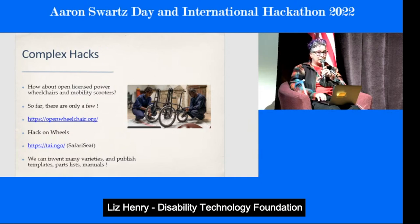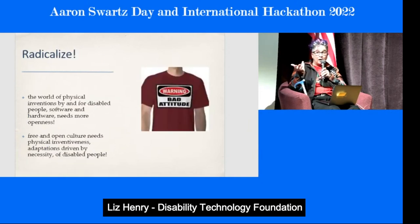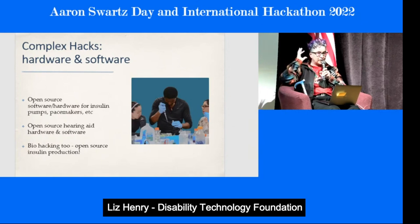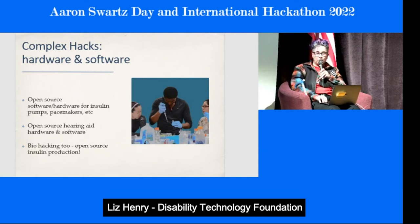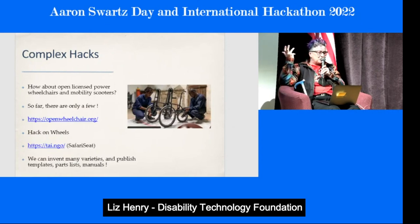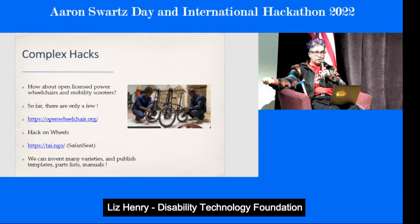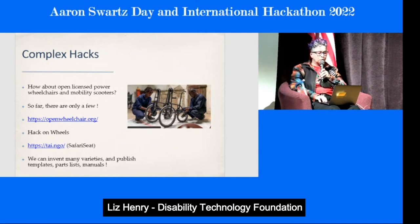Open source hearing aids — there are people doing all kinds of hacking for them, and now that they're becoming commodity devices you can buy over the counter, we'll hopefully see more projects to adjust the software or build your own. There's also biohacking — people doing open source insulin production, which is super exciting. And my favorite: open license power wheelchairs and mobility scooters. There are only a few of these projects, very new, just in the last five years. They're trying to build wheelchairs that work in specific terrain and locations under specific conditions.